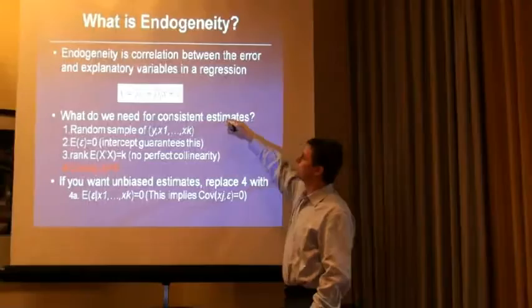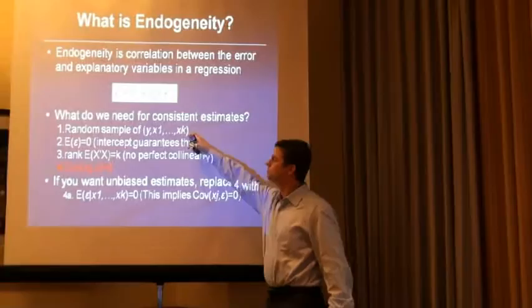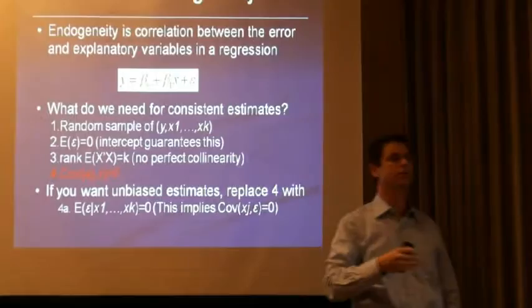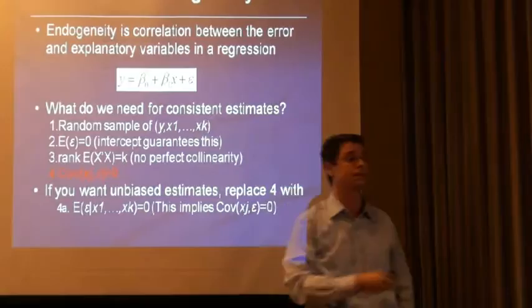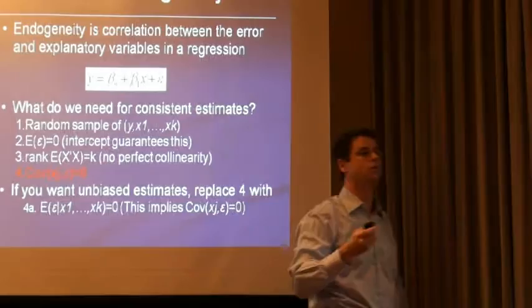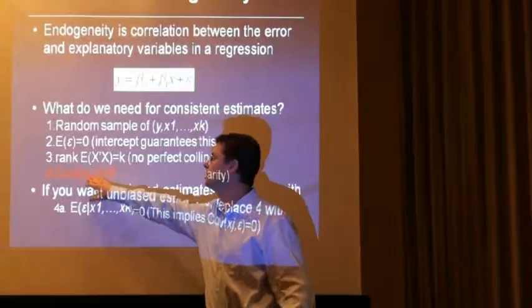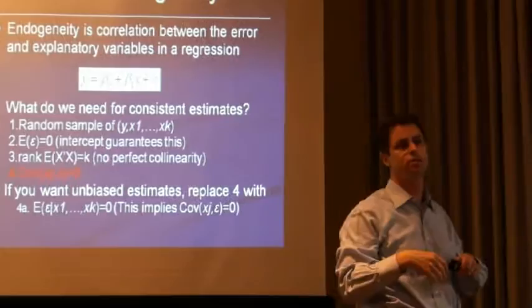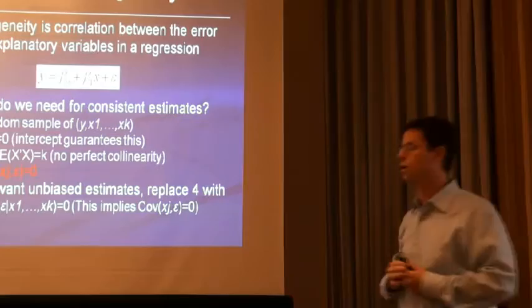What do we need for good estimates — consistent estimates, estimates that actually go towards truth when our samples get really big? Well, you need a random sample on y and x. You need the expectation of the error term to be zero, but that's a gimme, because as soon as you put an intercept in, that guarantees that. You need the rank of x to be full — no perfect multicollinearity. And then finally, and perhaps most importantly, you need the covariance between x and epsilon — equivalently the correlation — to be zero. That is what this talk is about.